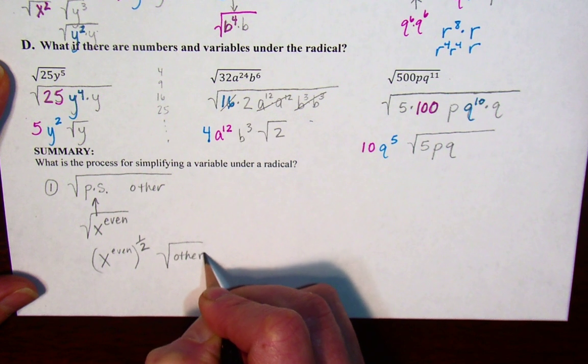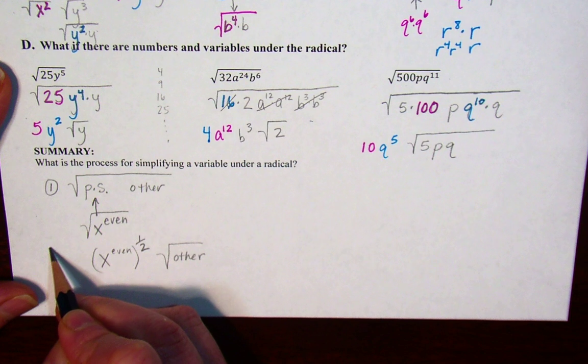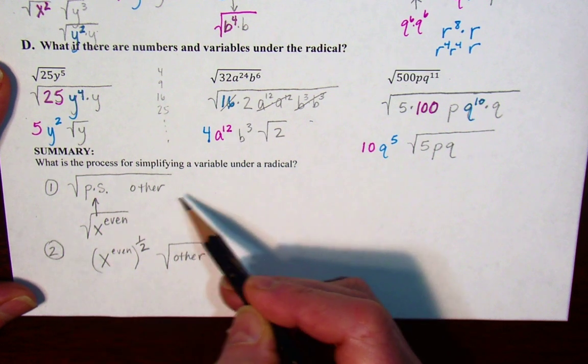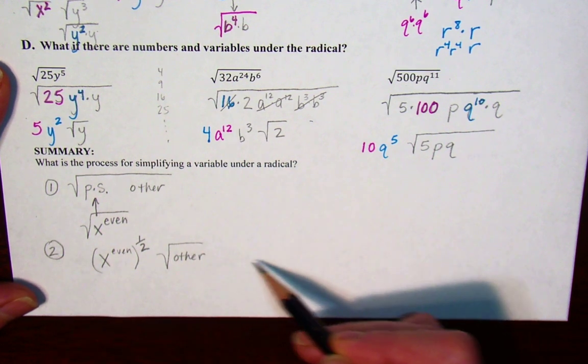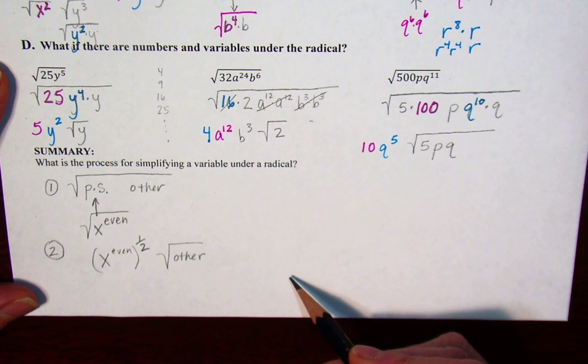Please don't just copy down what we have written here. Please write out in words and describe the process of simplifying a variable underneath the radical the way you do it in your own words, in your own head.